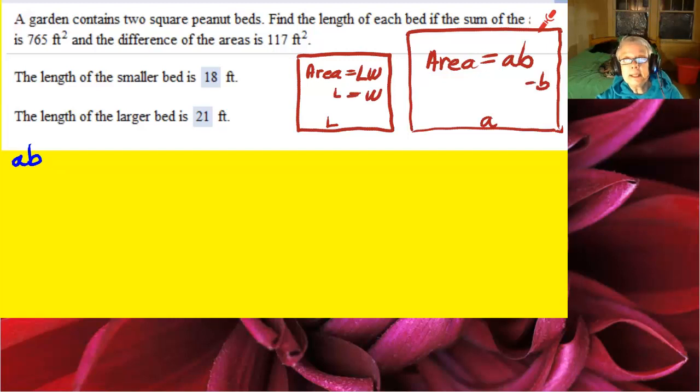Now since these beds are squares, the length and the width equal each other. So we can call the length and the width of the smaller square L, and we can call the length and the width of the larger square A.